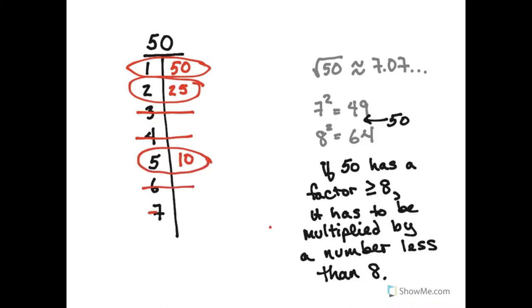6 doesn't work. 7 doesn't work. 8 and 9 don't work either. And then I would get back to 10. But I already have it because 10 times 5 is 50. So I have now all the factor pairs of 50.